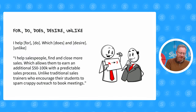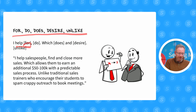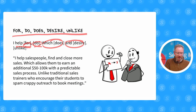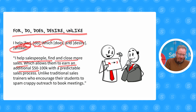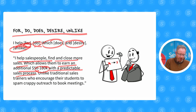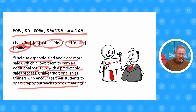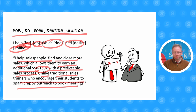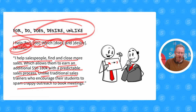The other way is slightly more in depth — we call this the Do/Does/Desire/Unlike process. It goes like this: I help these people do something, which does cause a desire, unlike a competitor. So for me: I help salespeople find and close more deals, which then allows them to earn an additional $50,000 to $100,000 in a predictable sales process, unlike traditional sales trainers who tend to just encourage their students to spam crappy outreach to try and book meetings. So: I help, do, which does, desire, unlike — that's the second way to build your value proposition statement.